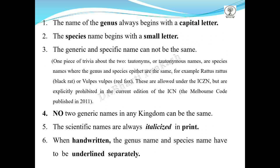The generic and specific name cannot be the same, though there are a few exceptions. For example, the genus and species are the same in Rattus rattus (the black rat) and Vulpes vulpes. These are allowed under the ICZN — the International Code for Zoological Nomenclature — but are prohibited in the current edition of ICN, the Melbourne Code published in 2011. No two generic names in the kingdom can be the same. Scientific names are always written in italics in print, and when handwritten, the genus name and the species name must be underlined separately.